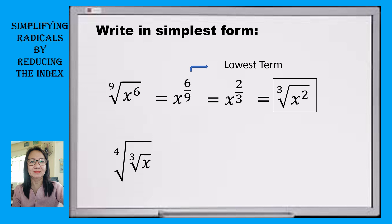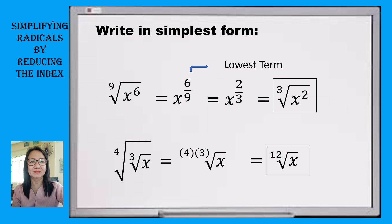Now let's take a look at our next example: the fourth root of the cube root of x. So multiplying the indices, 4 times 3 is 12. Therefore, we have the 12th root of x. This is the simplest form.